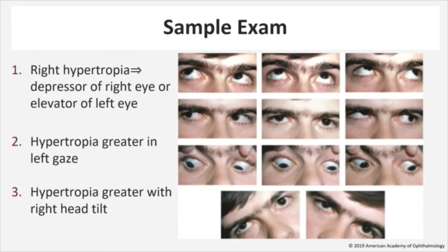Therefore, the right superior oblique, right inferior rectus, left inferior oblique, or the left superior rectus could be our culprit. Moving on to the second step of our exam, we can see that the patient's hypertropia is greater in left gaze. Therefore, our paretic muscle must be one whose primary action is to elevate the left eye — thus the inferior oblique on the right side or the left superior rectus — or one whose action is to depress the right eye in left gaze, therefore the right superior oblique or the left lateral rectus. From step one, we ruled in both the left superior rectus and the right superior oblique as possibly dysfunctional, so we can eliminate the right inferior rectus and the left lateral rectus from our differential.